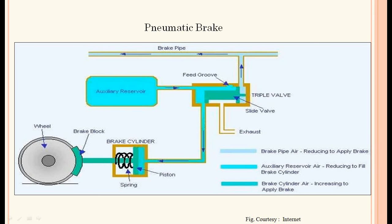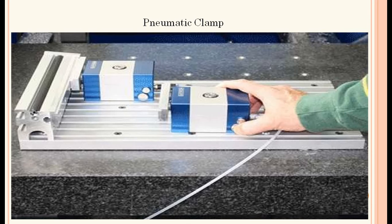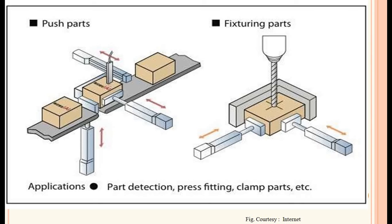The extended cylinder rod presses the brake shoe against the wheel drum and the brake is applied. Different color coding is shown to indicate different conditions of air in the system. Pneumatic clamping — for clamping of components we can use pneumatic systems. Components can be pushed from the conveyor and then fixtured; a part is fixed in the fixture by applying pneumatic force for drilling at the required point.